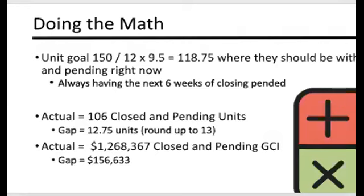Now the same with our gross commission income. Take the GCI goal of $1.8 million, divide by 12, multiply by 9.5. That gives us where we should be right now: $1,425,000. When we subtract what we've actually closed — $1,165,380 — and what we've pended — $102,987 — that puts us with a gap of $156,663.